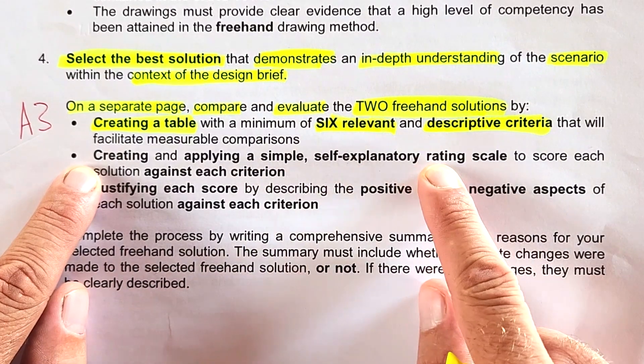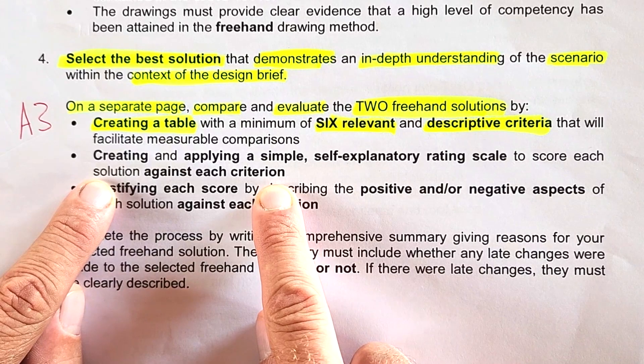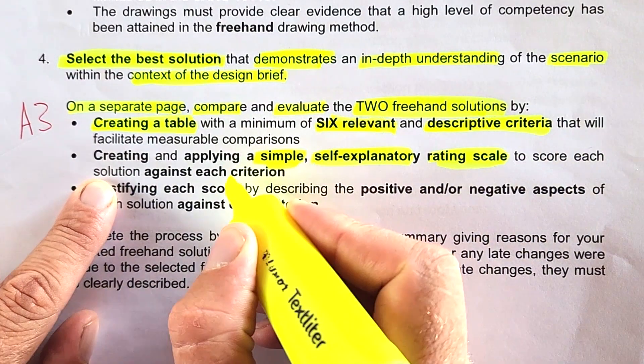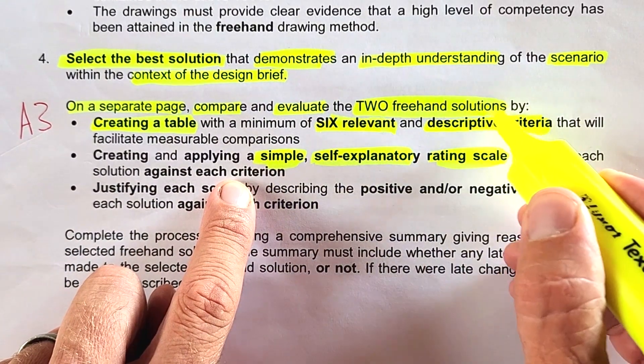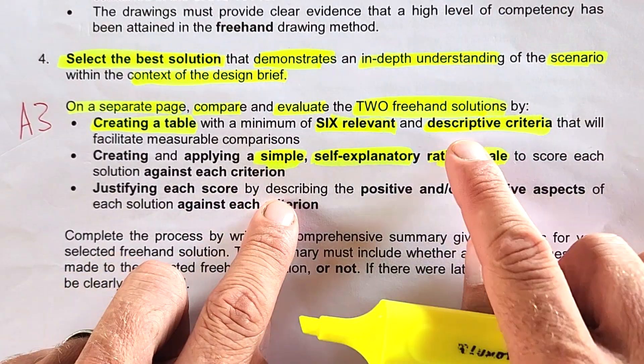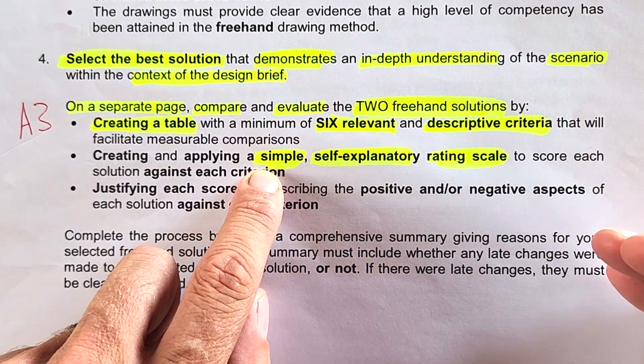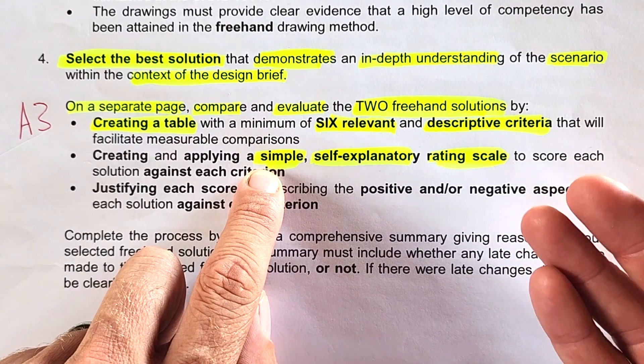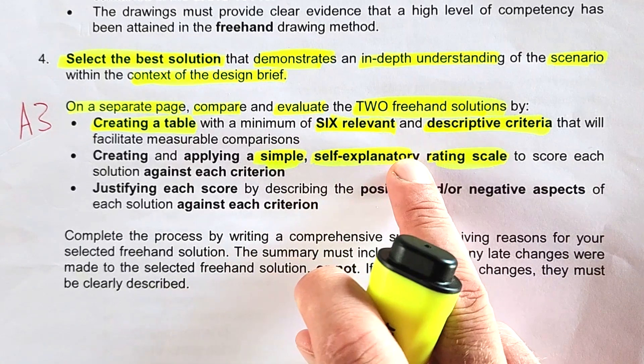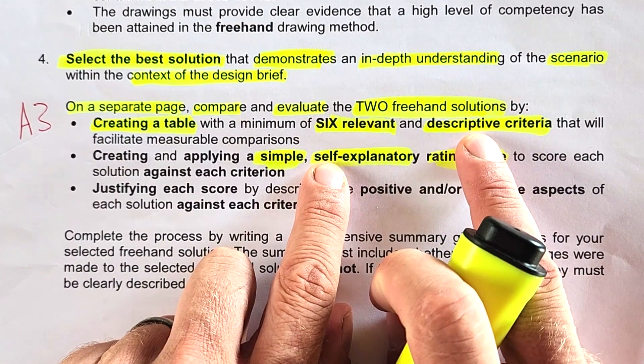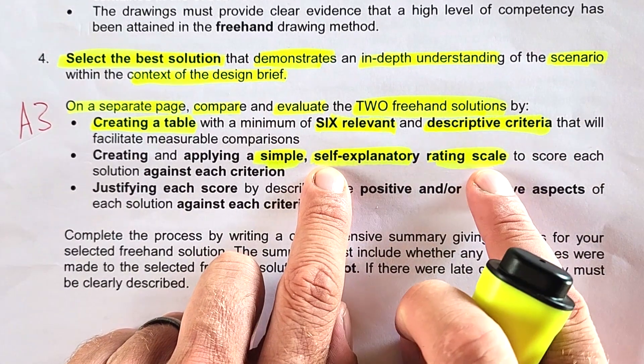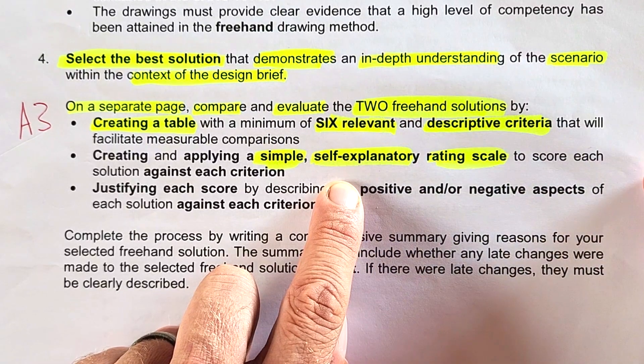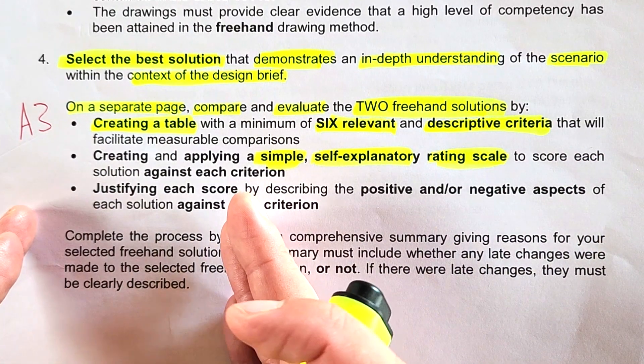You have to create and apply a simple self-explanatory rating scale to score each solution against each criterion. It needs to be simple, self-explanatory, and a rating scale. For instance, your first descriptive criteria is the kitchen access to the serving counter. You can give a rating as five out of five for excellent, four out of five for very good, three out of five for good, and two out of five for poor. If you give a rating, it's very self-explanatory what rating you've given. For one concept you might give five out of five, for the second you might give three out of five. That tells you the first concept is superior to the second in that specific instance.